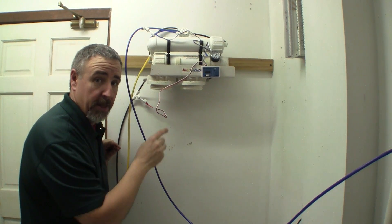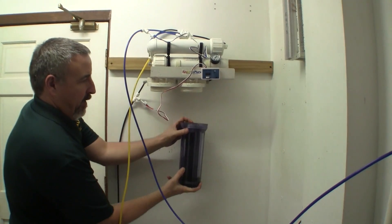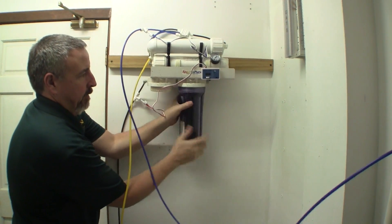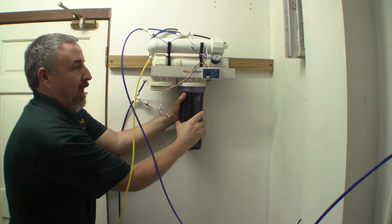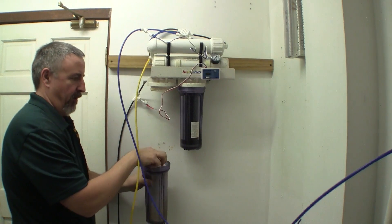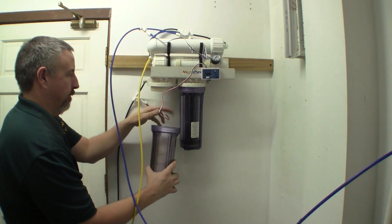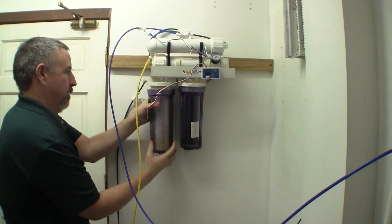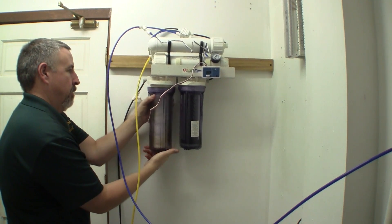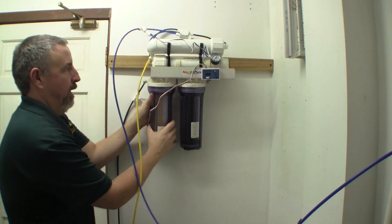Now all I really need to do is put on the pre-filters. So here is the carbon pre-filter with a new cartridge. Hand tight is plenty. And here is the new sediment filter with a brand new cartridge. I'll get these flat and tight.